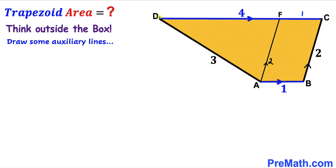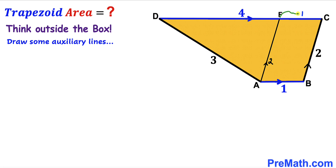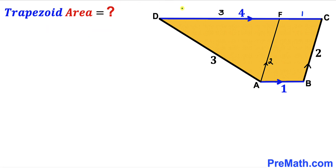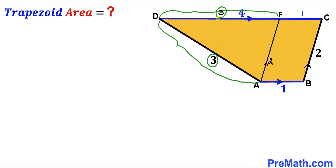Now let's make an observation. We know the whole CD length is 4 units, and segment FC is 1 unit. So the remaining segment DF is going to be 4 minus 1, which gives us 3 units.